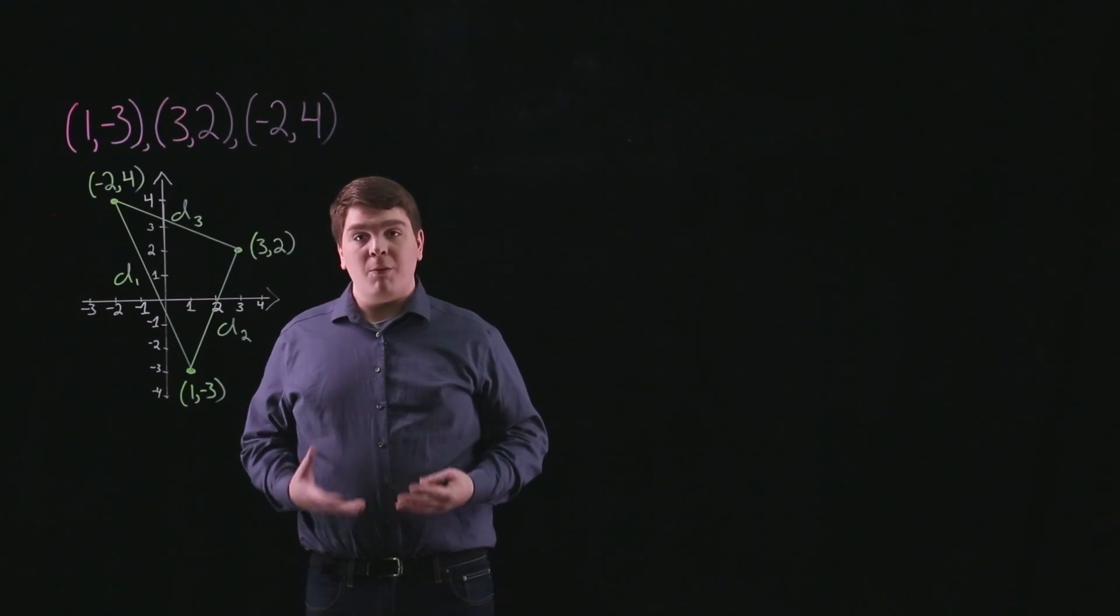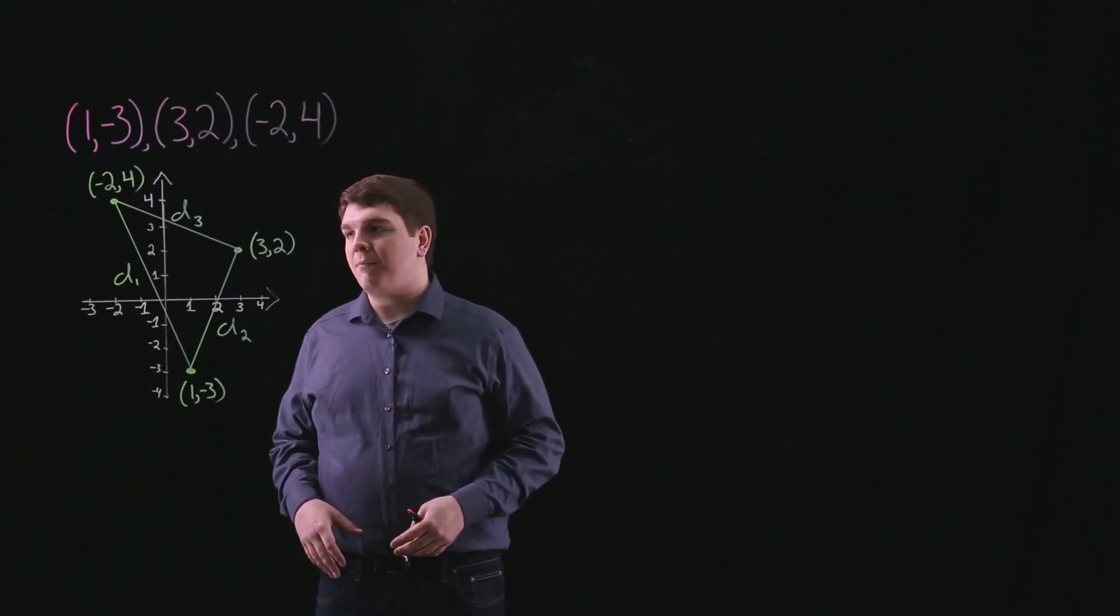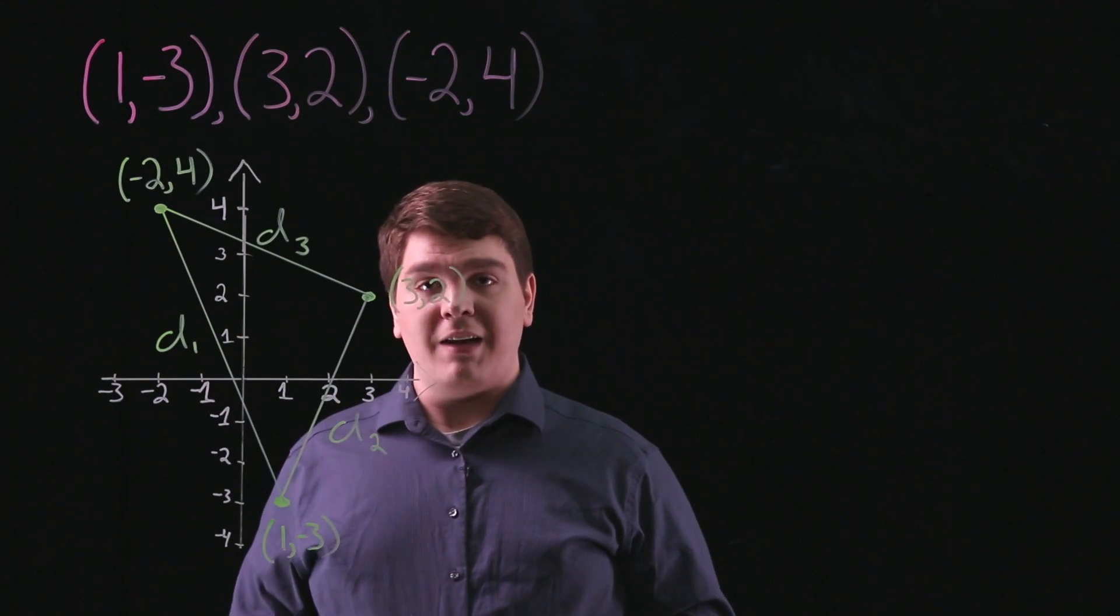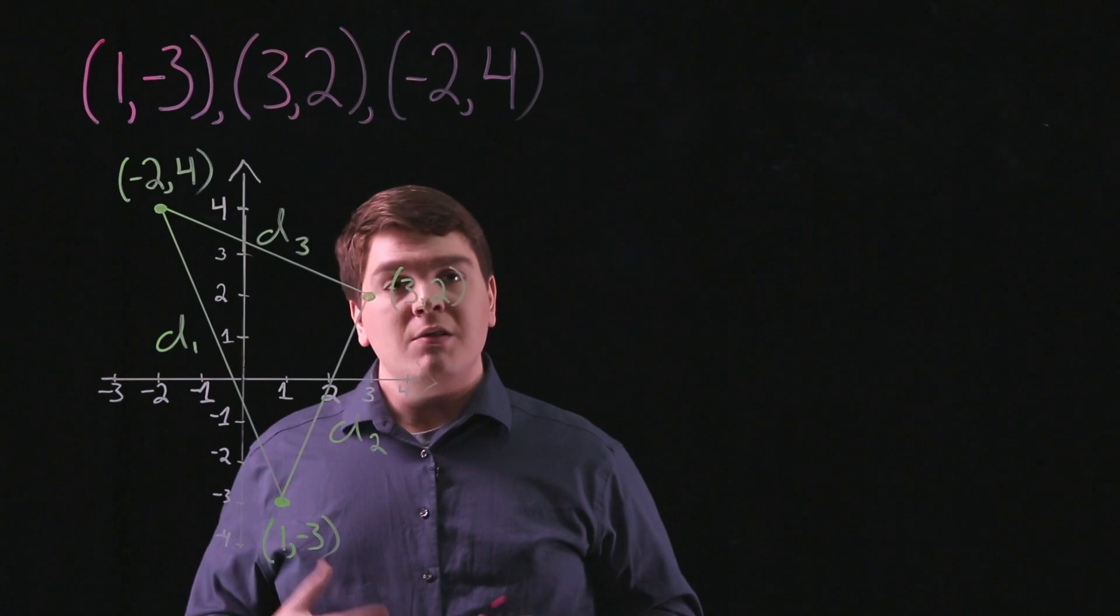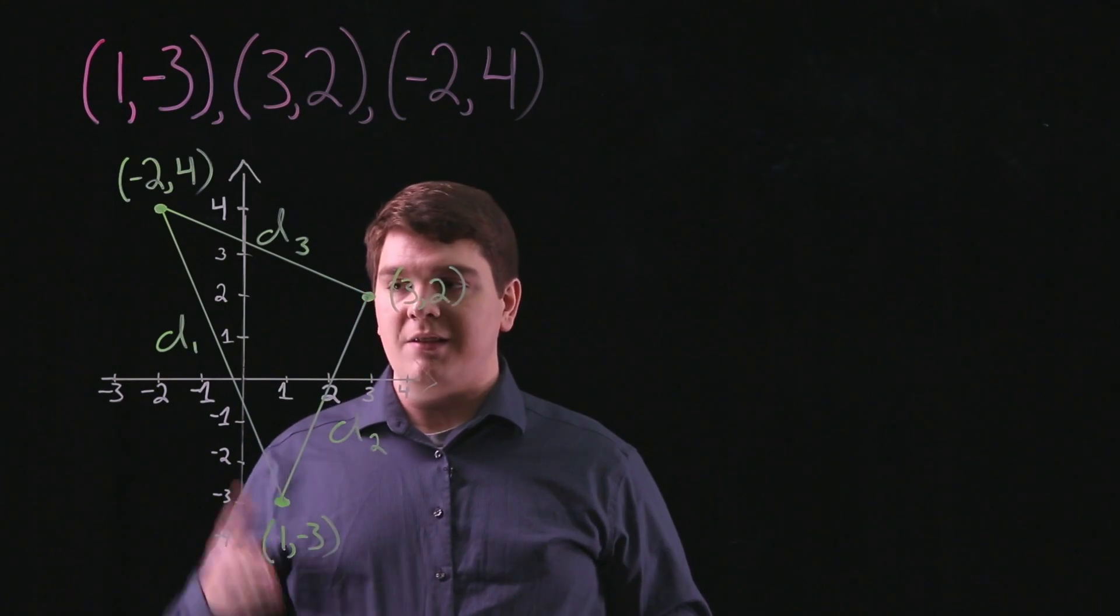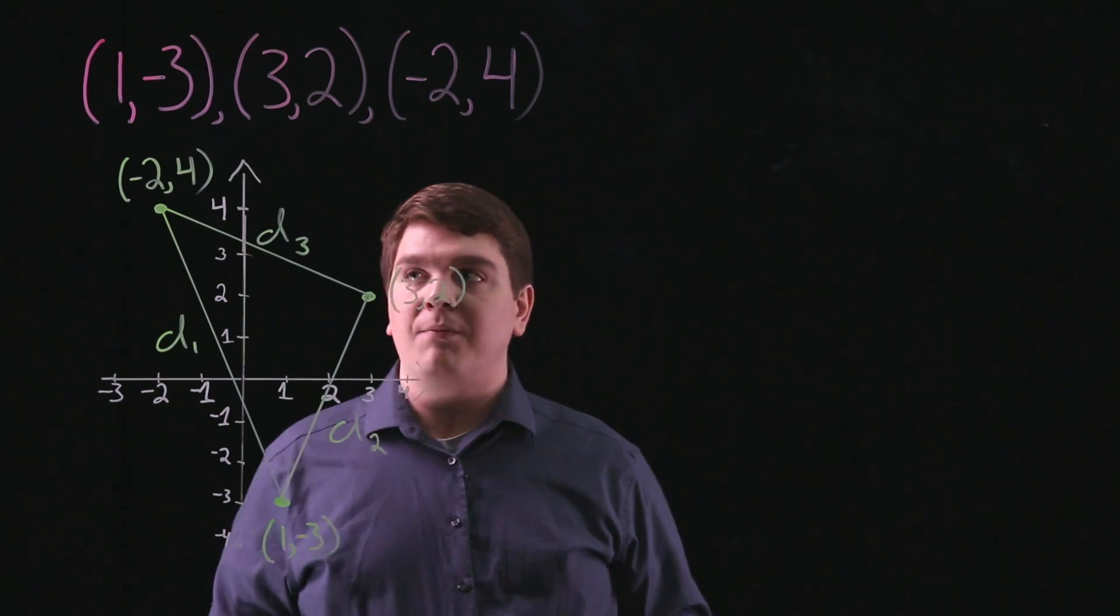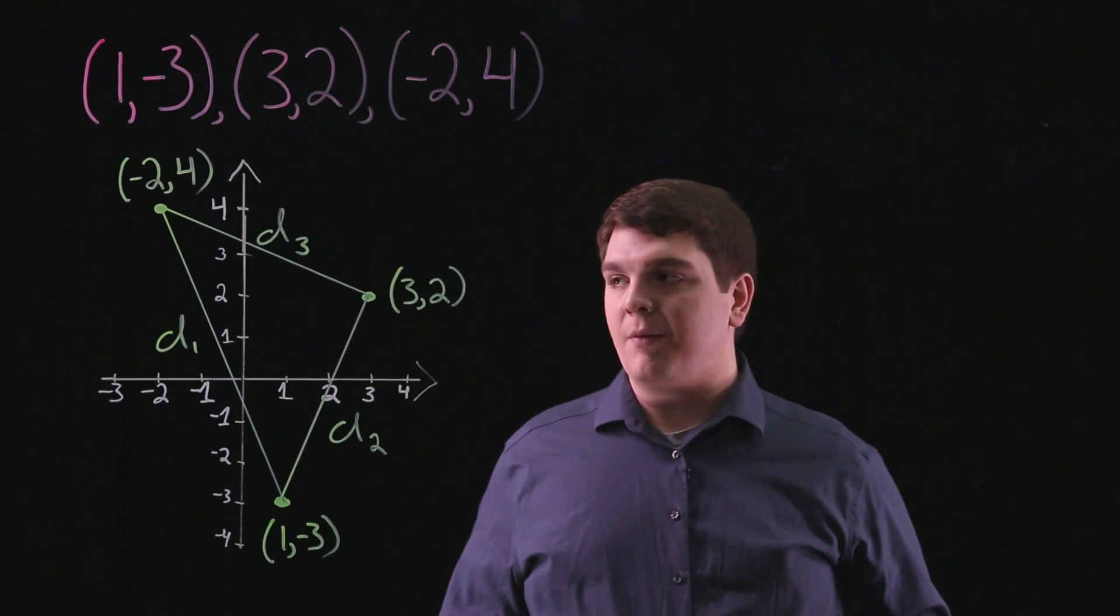That is, a triangle where two of the sides are of equal length. So what we have here is the three points plotted and connected to form a triangle. What we want to show is that two of our side lengths, d1, d2, and d3, have equal length. In order to do this, we will use the distance formula.